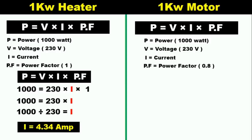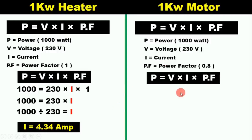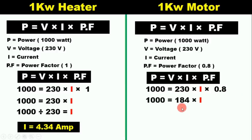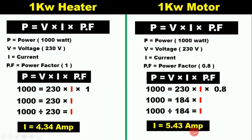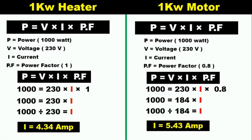Now putting all values into the formula: 1000 equals 230 into I into 0.8. When we multiply 230 by 0.8 the answer is 184. Now divide 1000 by 184 — the answer is 5.43 ampere. So you can see the difference: the 1 kilowatt heater with power factor 1 draws 4.34 ampere, while the 1 kilowatt motor with power factor 0.8 draws 5.43 ampere. The value changed due to the different power factors, meaning the motor consumes more current and the heater consumes less.